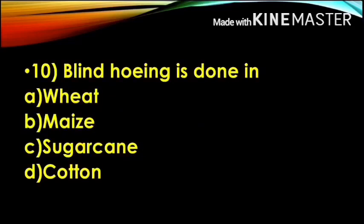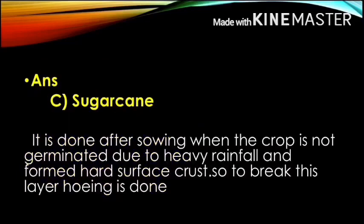Next question: Blind hoeing is done in — Option A, Wheat; Option B, Rice; Option C, Sugar Cane; Option D, Cotton. Blind hoeing is done in sugarcane. When you want to break the soil surface and regulate water, you perform blind hoeing in sugarcane.